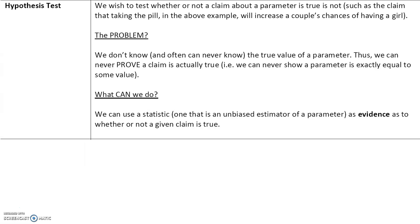We wish to test whether or not a claim about a parameter — remember, a parameter is a measurable characteristic of a population — is true or not, such as the claim that taking the pill in the above example will increase a couple's chances of having a girl. The problem is we don't know and we can never know the true value of a parameter, thus we can never prove a claim whether or not it's actually true. Instead, we can use a statistic — one that is an unbiased estimator of a parameter — as evidence to show whether or not a given claim is true.